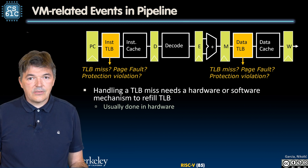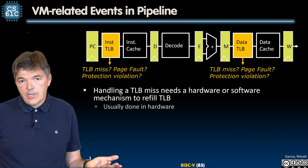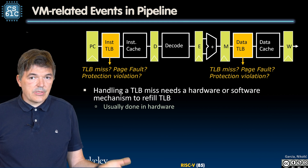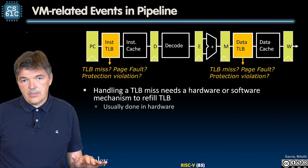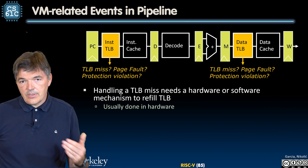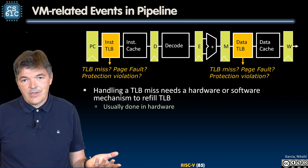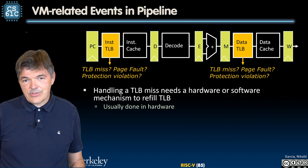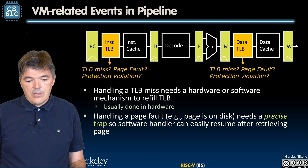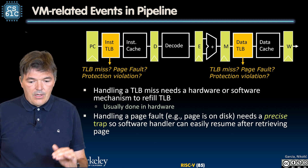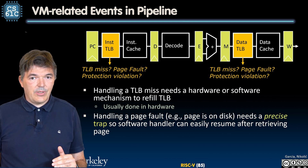First, let's take a look at TLB misses. Handling a TLB miss needs a hardware or software mechanism to essentially walk the page tables and update the TLB. In most current machines it is done in hardware and it can be done fairly quickly. It is essentially an implementation of a straightforward, though perhaps not so simple, state machine that is going to do that. On the other hand, handling a page fault needs a precise trap, and we have seen how we implement those.